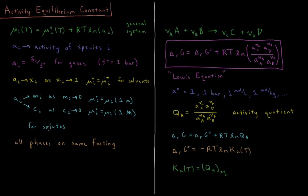For solutes — things which are very dilute in a solution with a very low mole fraction — the activities can be defined from previous chapters either based on their molality or their molarity. The activity of solutes approaches those values, according to Henry's Law, as the concentration approaches zero. For solutes, the standard chemical potential is equal to the chemical potential at one molal for a molality-based activity — one molal being one mol per kilogram of solvent. For molarity, the standard chemical potential is equal to the chemical potential at one molar, which is one mol per liter of solution.